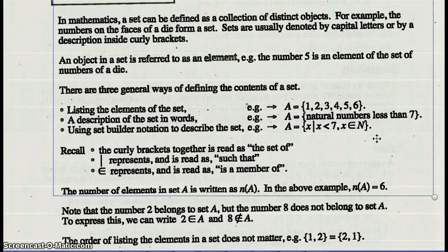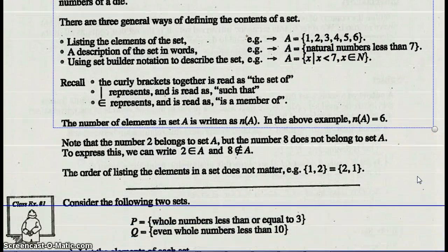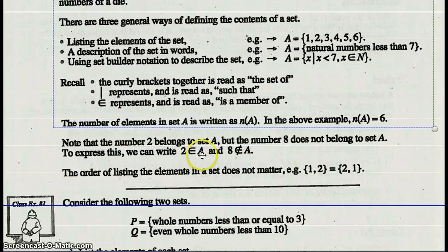The number of elements in set A is written as n(A). In the above example, the number of elements in set A is 6, the numbers 1 through 6. Note that the number 2 belongs to set A, but the number 8 does not belong to set A. To express this, we can write that 2 is an element of A, whereas 8 is not an element of set A.